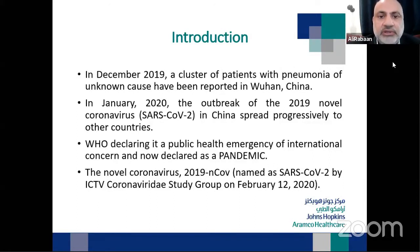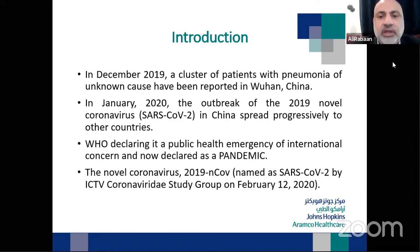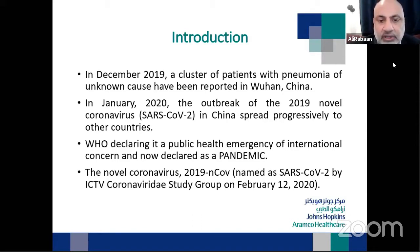Last December, a cluster of patients with pneumonia of unknown cause was reported in Wuhan, China. In January 2020, the virus began spreading progressively outside China to all countries. WHO declared it a public health emergency of international concern when it was in China, and later declared it a pandemic. The coronavirus was initially called the 2019 novel coronavirus and was named SARS-CoV-2 by the International Committee of the Coronavirus Study Group in February 2020.